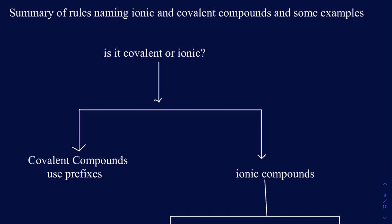The very first question you always ask yourself is if the given compound is covalent or ionic. If you have only nonmetals in a given compound, then you fall into the category of a covalent compound. When you have a covalent compound, the rule you use to name it is by using prefixes. There is no positive or negative in a covalent compound, and to specify how many atoms you have, you use prefixes such as di, tri, tetra, and so on.